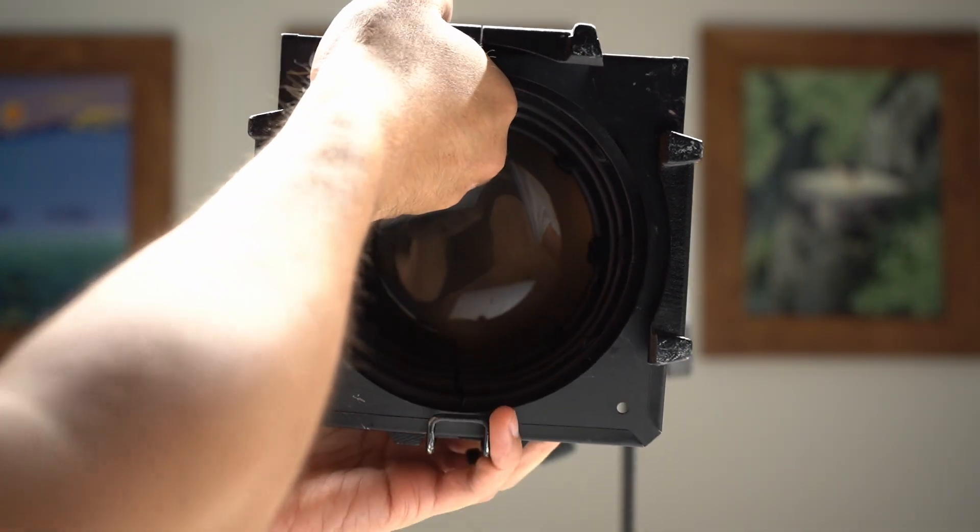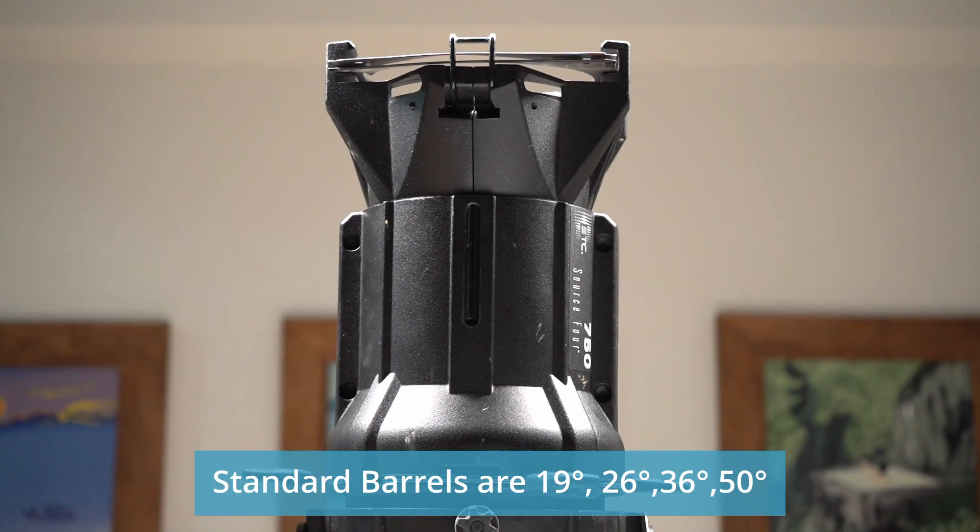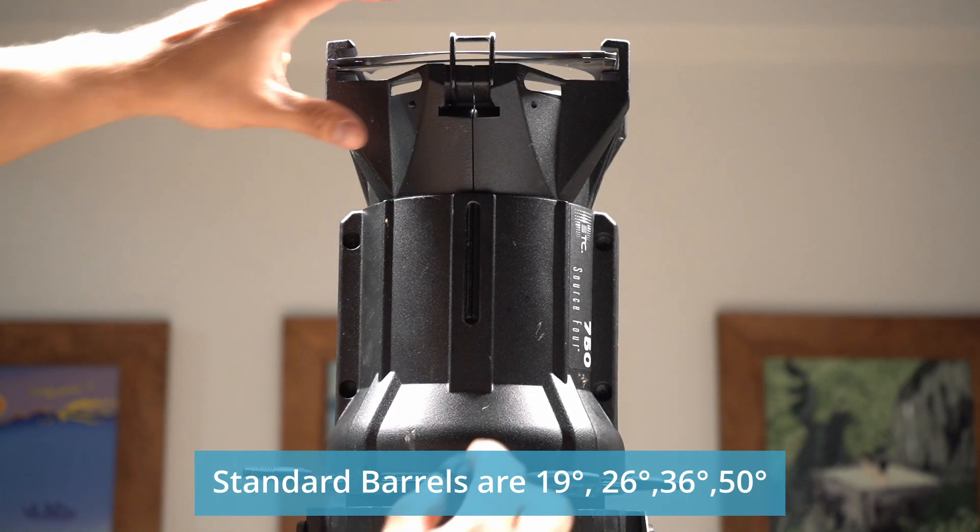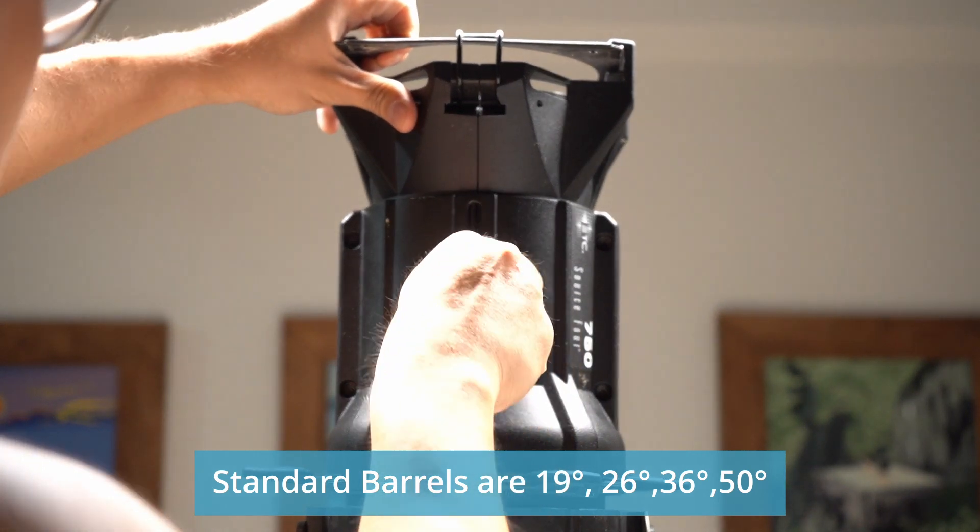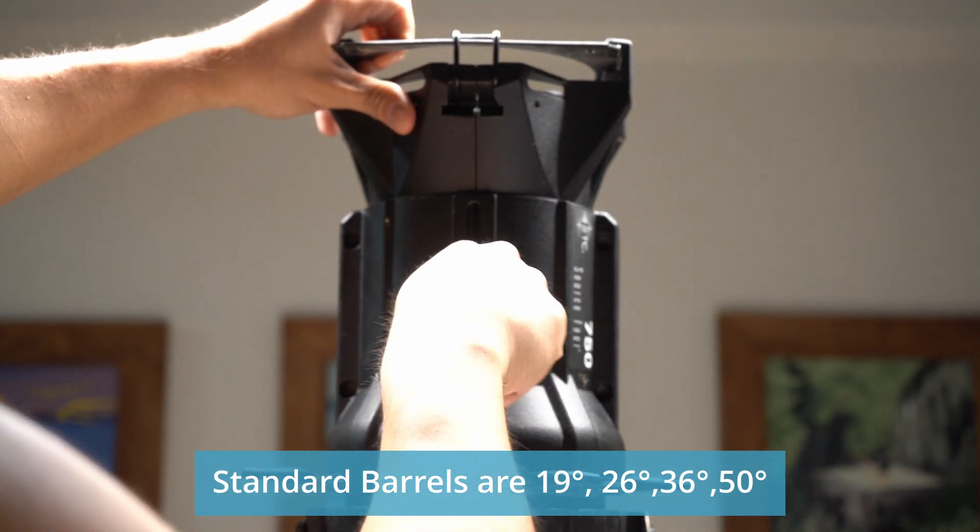The hole at the side of the Leko barrel is used to change the distance of the lens from the barrel. Changing the distance will affect the spread of the light and also the texture of the light. I'll show you guys later what I mean.